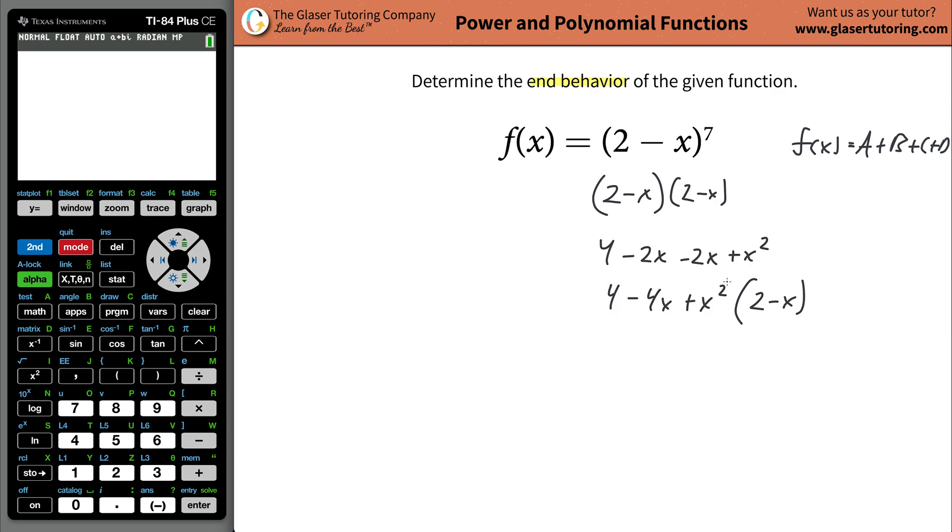The degree of this polynomial now should be a third degree. Why? Because when I basically take this x squared and I multiply it eventually by the negative x, it'll work out to be negative x cubed.